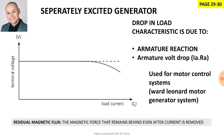A practical application for a separately excited generator: it can be used for Ward-Leonard motor generator systems. At the bottom of the page, we look at residual magnetic flux. Even though you have an electromagnet, the steel becomes magnetized as current runs through it. But even after the current is removed, there is still some magnetizing force left behind — that is known as residual flux.